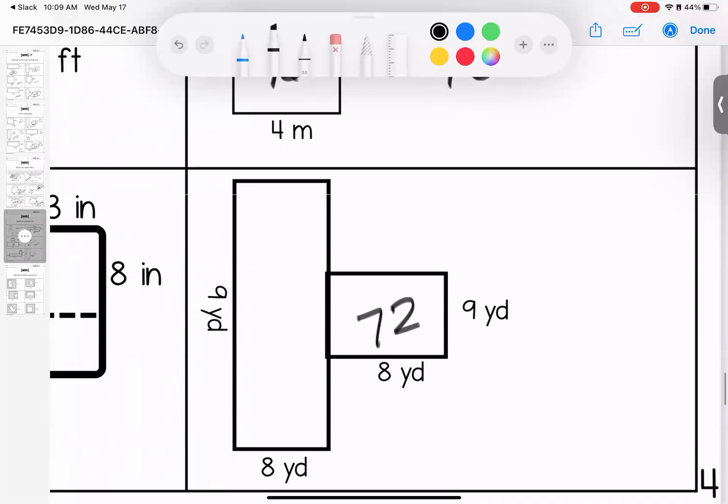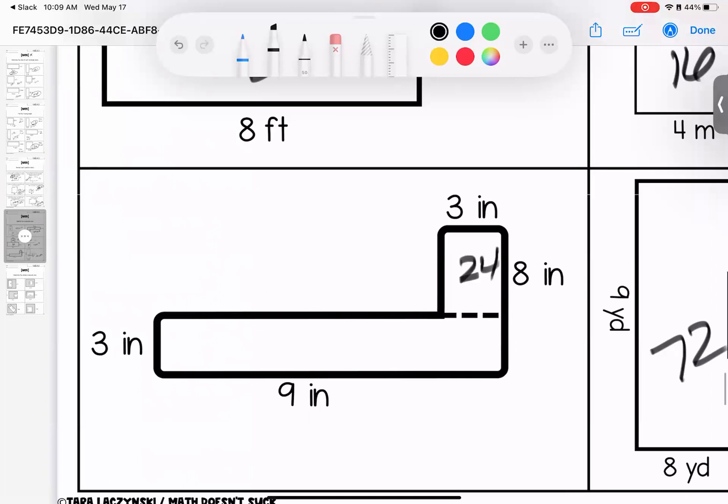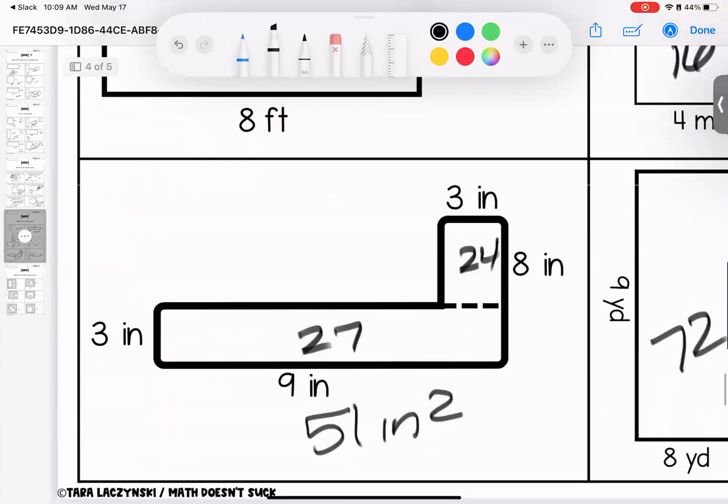9 and 8 is 72, 9 and 8 is 72. 72 and 72 is 144 yards squared. 8 and 3 is 24, 9 and 3 is 27. 27 and 24 give us a total of 51 inches squared. And that is the end of that page. That one went quick. Any questions, bring them to class.